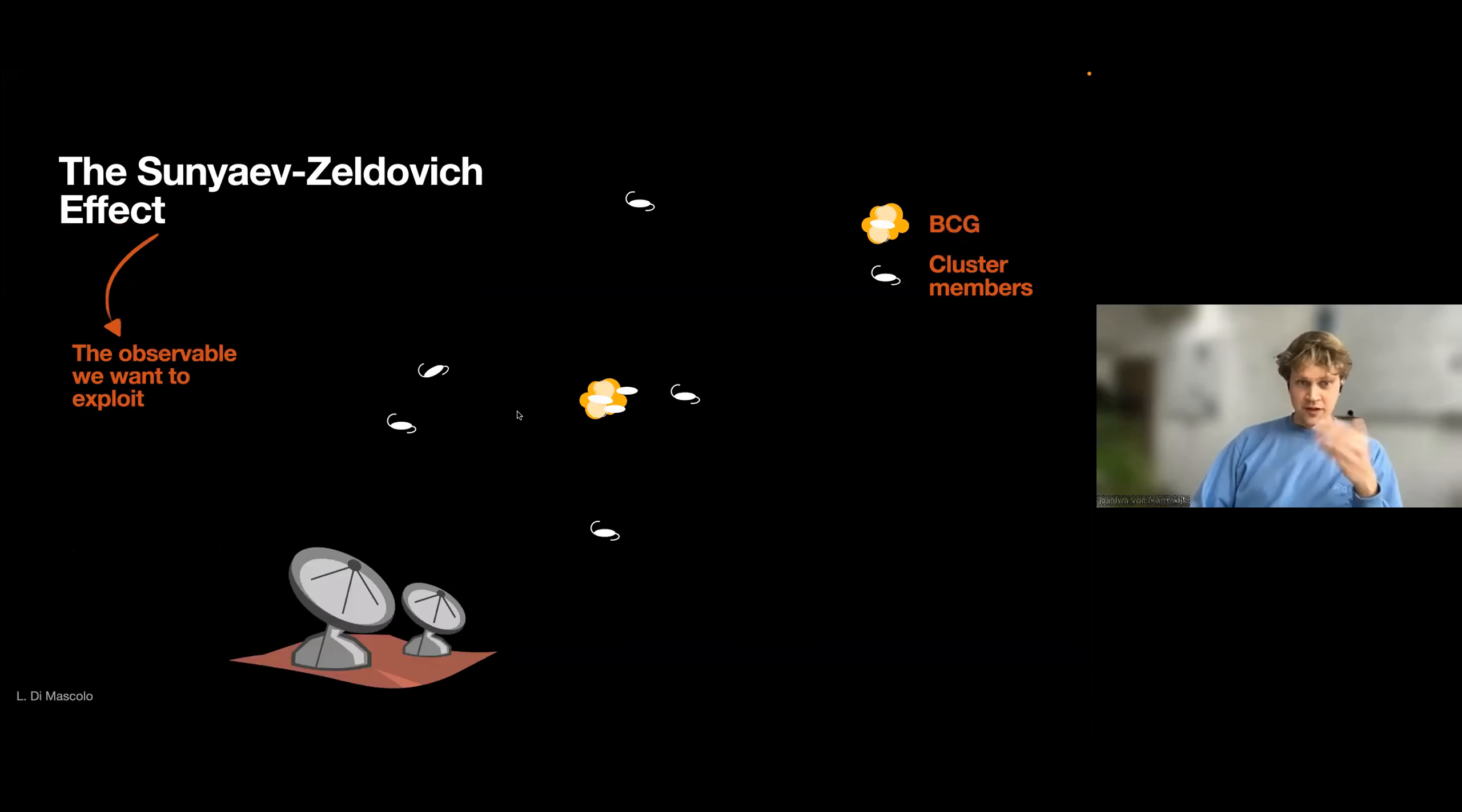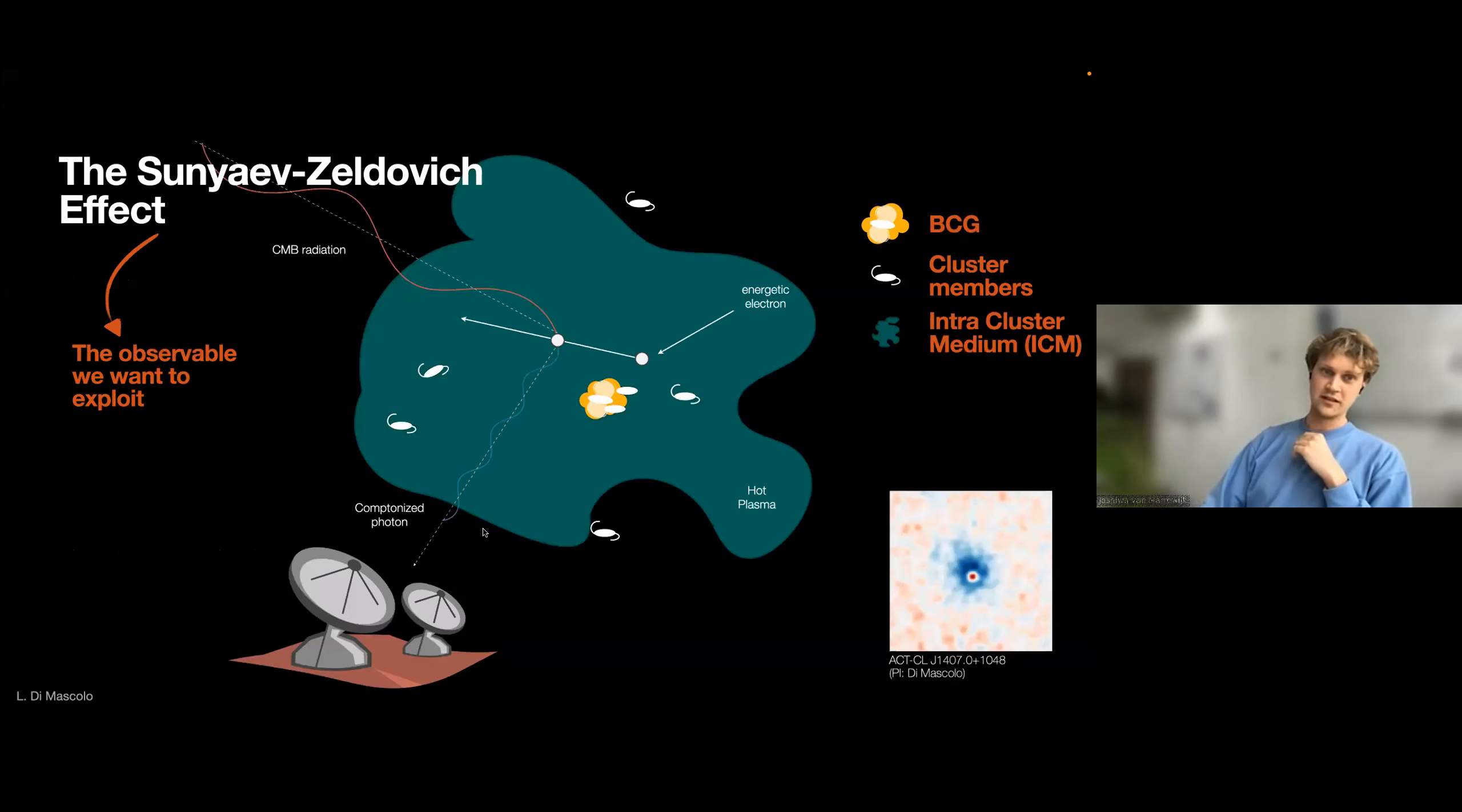Okay, just a little bit of an introduction. The observable we want to exploit to detect galaxy clusters in the sub-millimeters is the Sunyaev-Zeldovich effect. I'm aware that in the ALMA community, a lot of people, when they talk about galaxy clusters, focus a lot on the cluster members, which are these little dots here. But I want to talk about this diffuse extended emission—this hot intercluster medium, this plasma in between the galaxies.